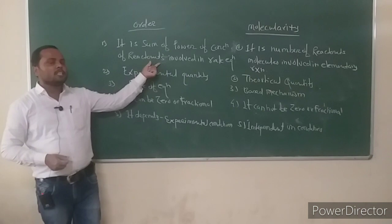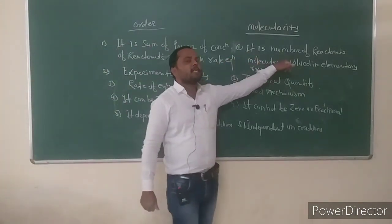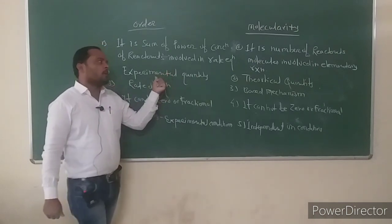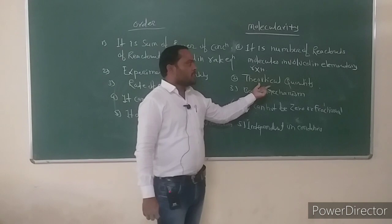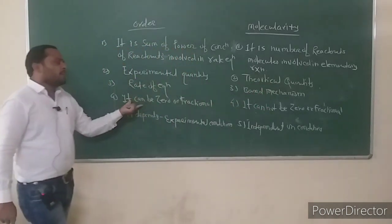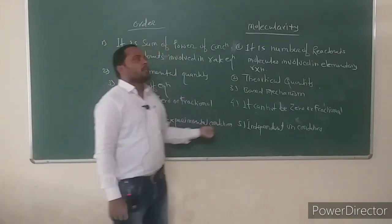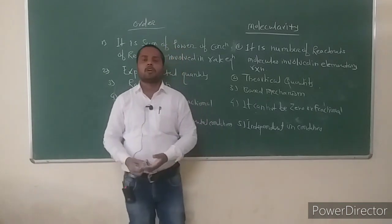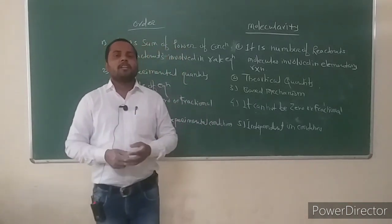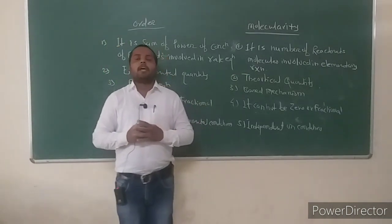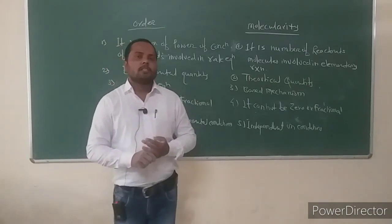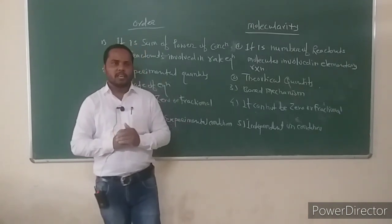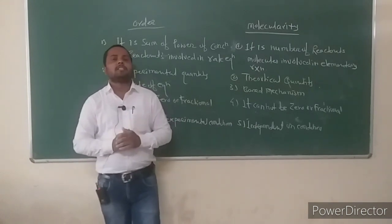To summarize: order of reaction is the sum of powers of concentrations of reactants in the rate equation — it is experimental and depends on reaction conditions. Molecularity is the number of reactive molecules involved in the elementary reaction — it is theoretical and based on mechanism. In the next lecture, we will derive the integrated rate equations for zero-order, first-order, and second-order reactions, and discuss factors affecting the rate of reaction.